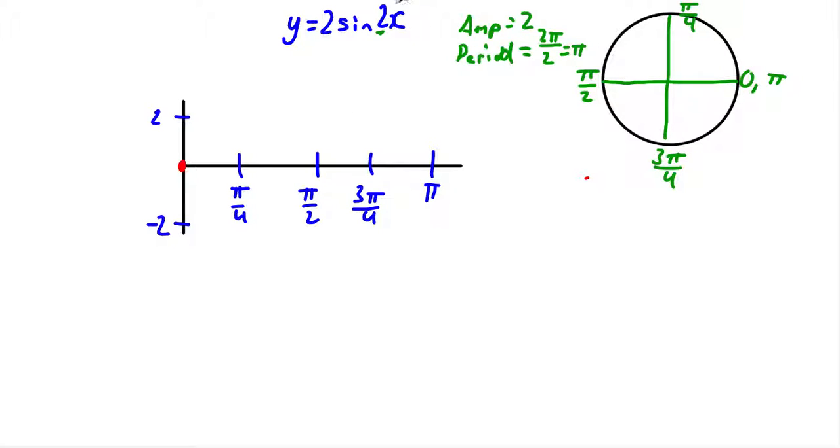Pi over 4, right here. 2 times pi over 4. Well, 2 times pi over 4, these reduce, and I get pi over 2. Well, isn't that the same position here? That's 90 degrees. The sin of pi over 2 is 1. So I have 2 times 1, which is 2.